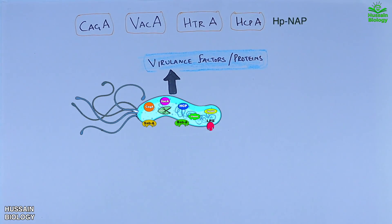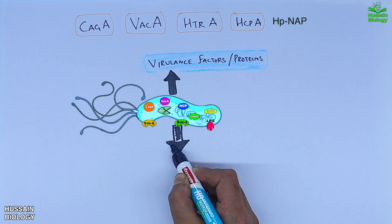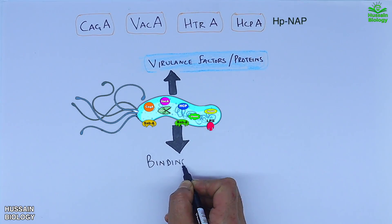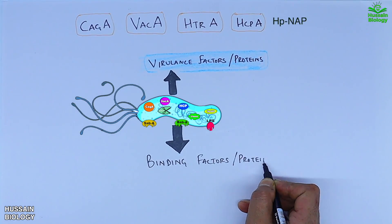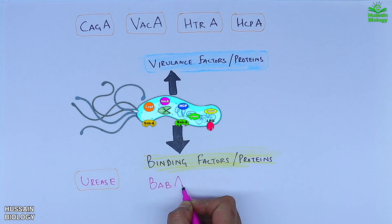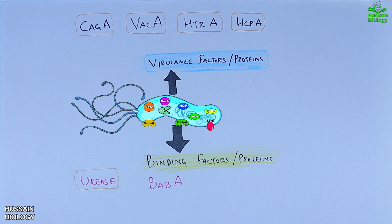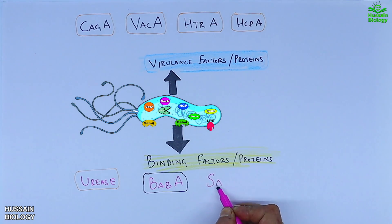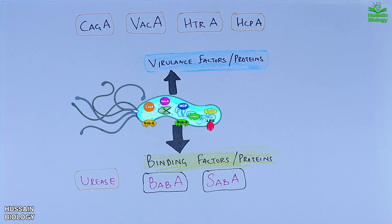And HpNAP — that's Helicobacter pylori neutrophil-activating protein. On the other side we have the binding factors or proteins: the first one is urease enzyme; the second one is BabA — that's blood group antigen binding protein A; and the third one is SabA — that's sialic acid binding adhesion protein.